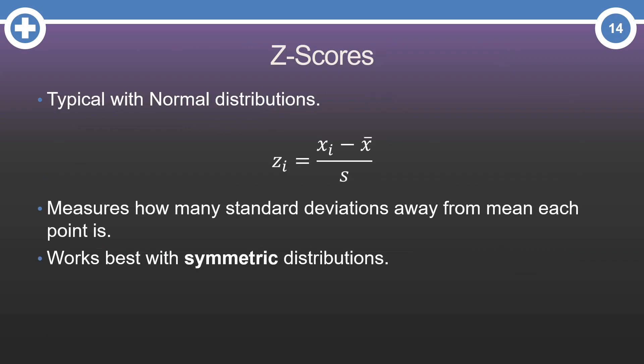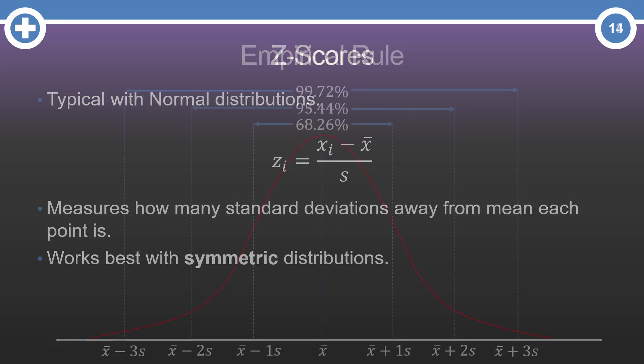And that is where z-scores come in. Z-scores are typical calculations with normal, or Gaussian, distributions. The z-score of an observation is just the observation itself, we'll call that x, minus the average of that variable across all observations divided by the standard deviation of that variable across all observations. Essentially, the z-score just measures how many standard deviations each point is from the average.